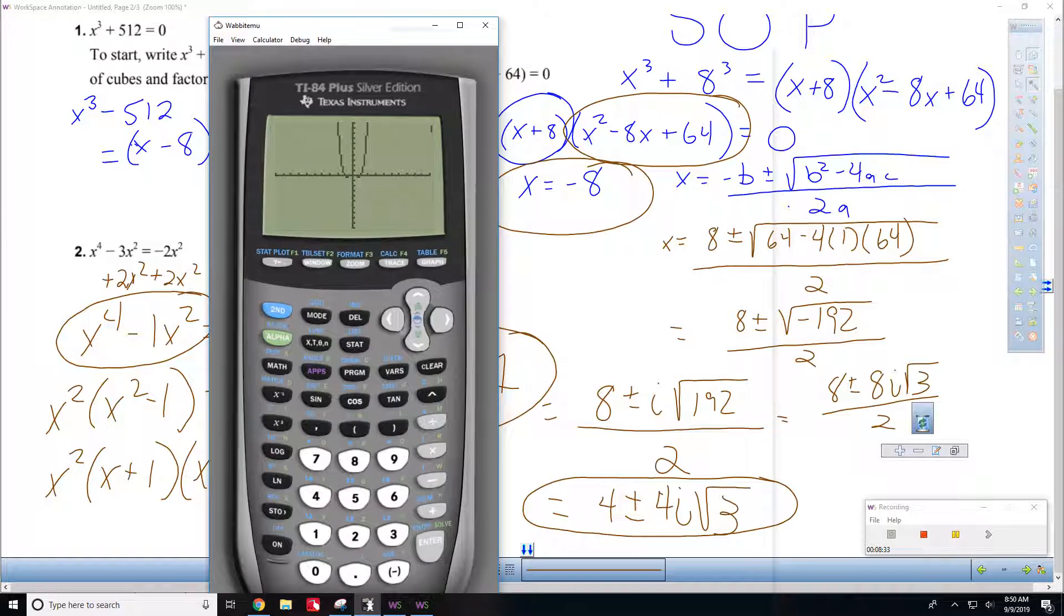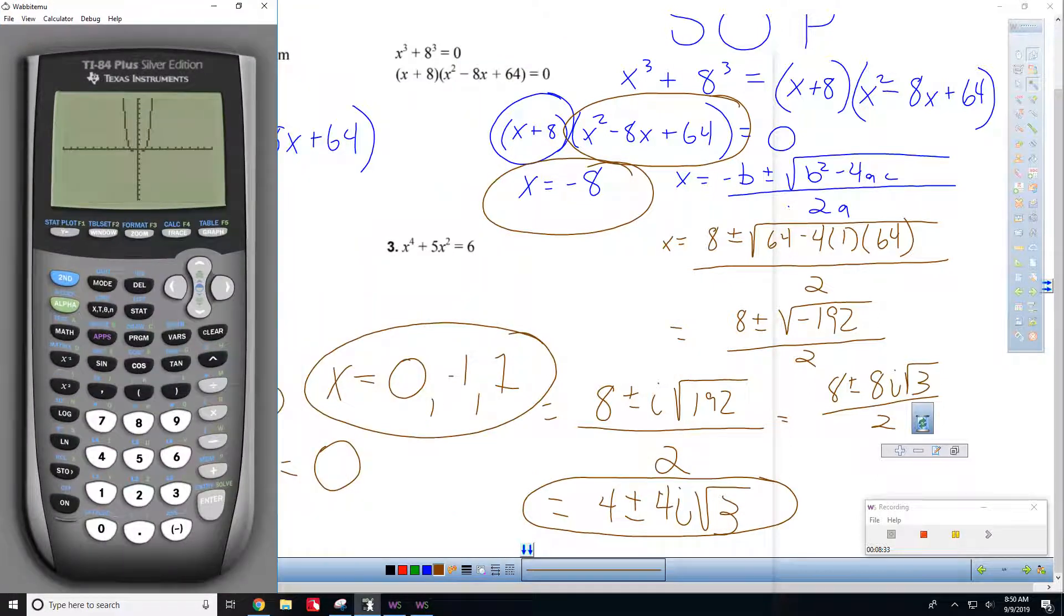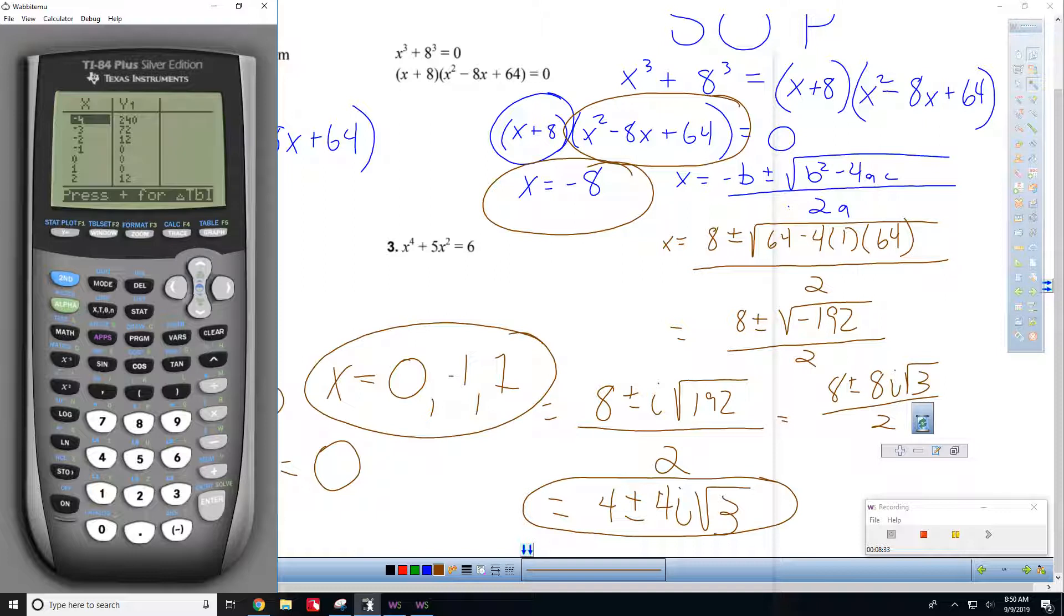Let's move this back over here. Now, you can't exactly see what's going on in this, but remember our answers were 0, negative 1, and 1. Let's go to the table. Look. 0, negative 1, and 1 all result in an answer of 0. So, those are our zeros.